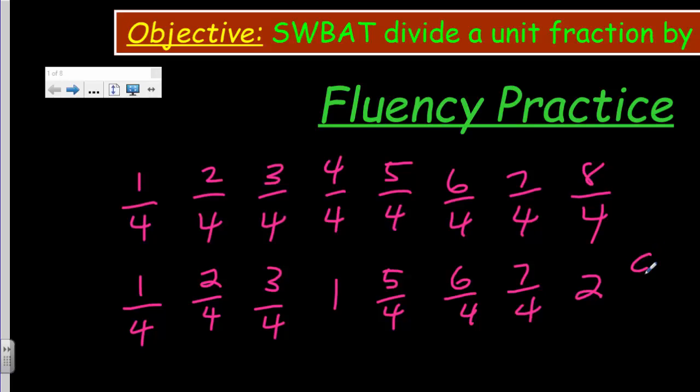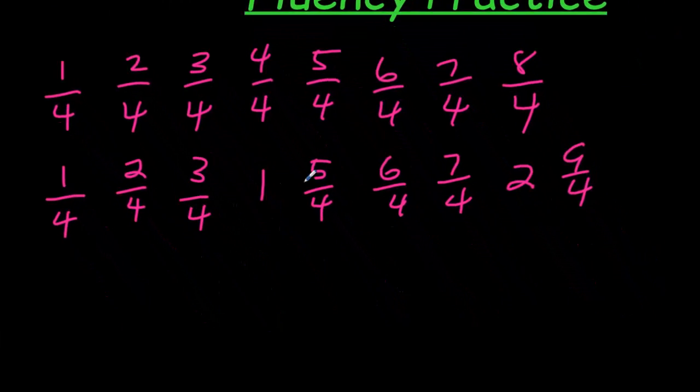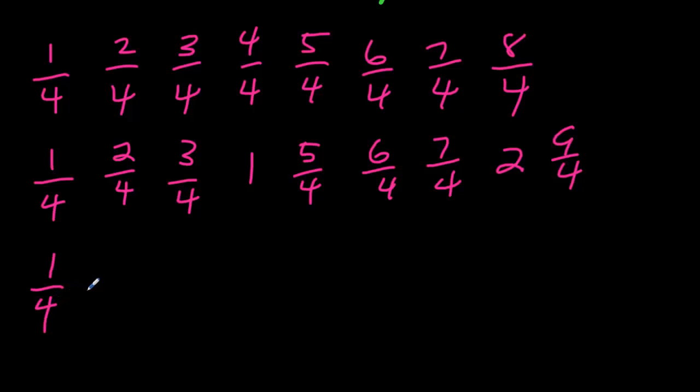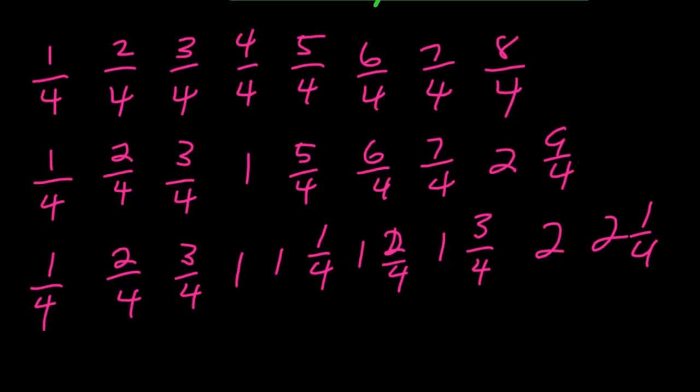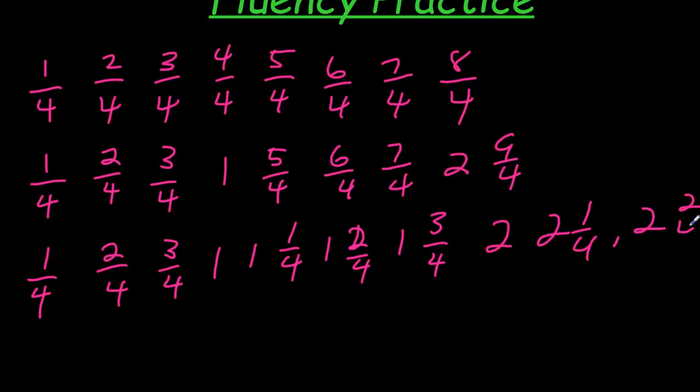We could keep going on, nine-fourths and on and on. This time, let's name all fractions greater than one as a mixed number. So here we have one-fourth, of course, two-fourths, three-fourths, one. Now I have one and one-fourth, right? One and, well, let's put one and a half. I want to keep it in fourths. One and three-quarters, right? And then we have two and two and a quarter. We could do this with fourths, we could do this with fifths, we could do it with sixths. Different ways that we can practice.